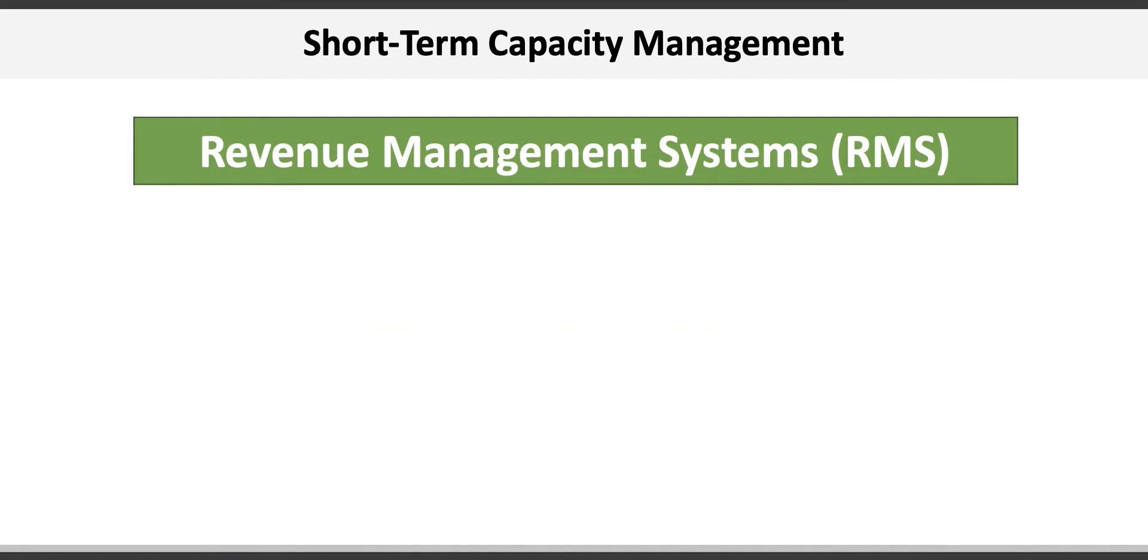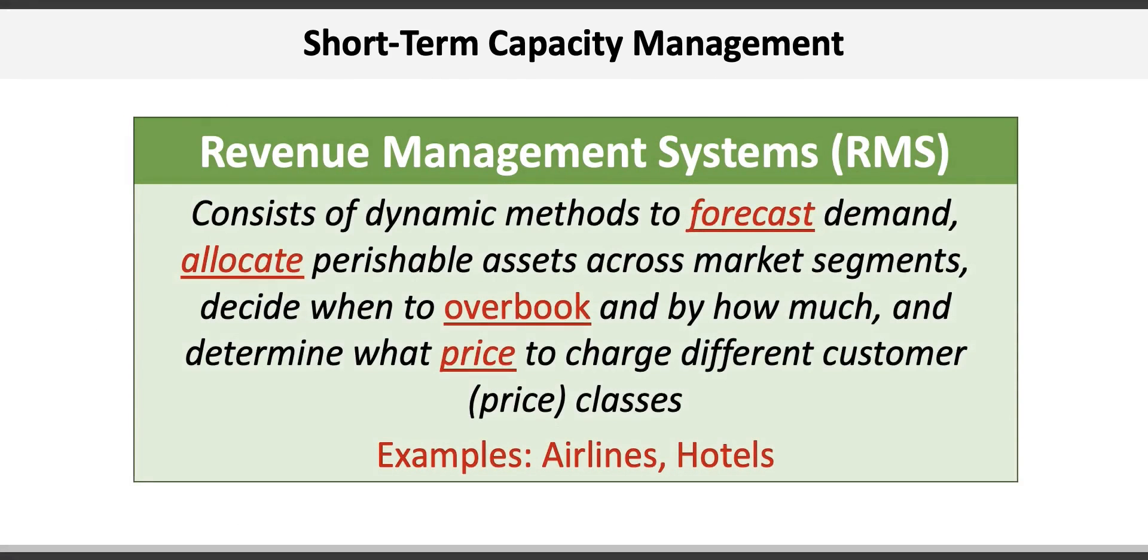Another way to manage perishable assets like hotel rooms and rental cars is through employing sophisticated revenue management systems, or RMS, which consist of dynamic methods to forecast demand, allocate perishable assets across market segments, decide when to overbook and by how much, and determine what price to charge different customers.